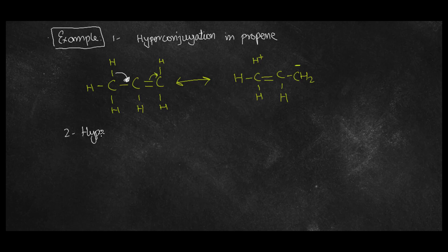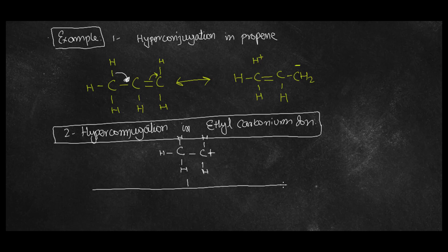Hyperconjugation in ethyl carbonium ion. Now you can see the example - there are three chances, three possibilities that ethyl carbonium ion can contribute in hyperconjugation. So now you can see in the second example there is no bond between carbon and hydrogen in ethyl. That's why it is called no-bond resonance.